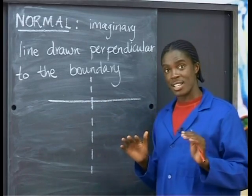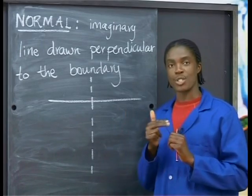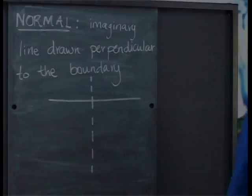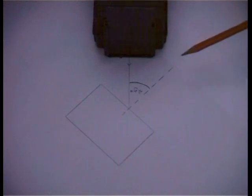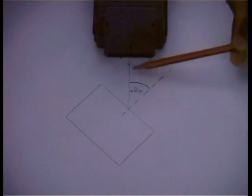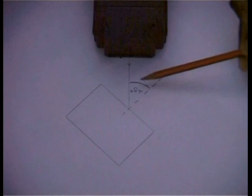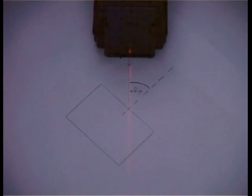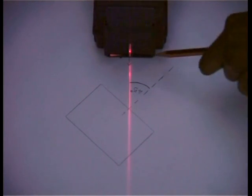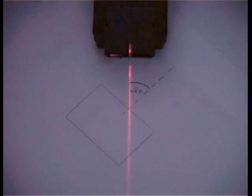We're going to dim our lights so that we can see properly how the light travels through the perspex block. I've already prepared for my experiment — I've outlined the block, drawn in the normal, and I have my incident ray at 45 degrees to my normal. Let's have the light on and see. The light is traveling through in a straight line. Now let's put in the block and see what happens.